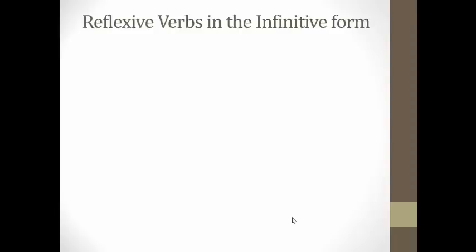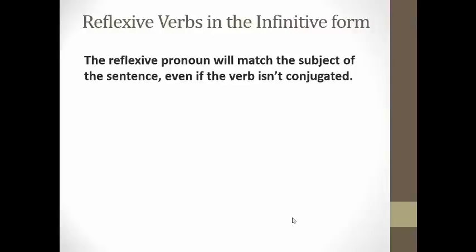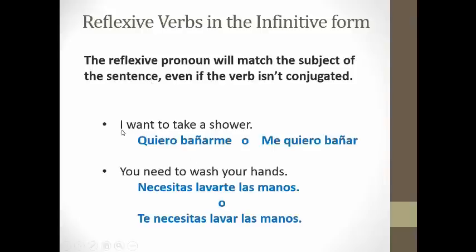Let's learn one more helpful hint when using reflexive verbs. Something important to remember: a reflexive pronoun will match the subject of the sentence even if the verb isn't conjugated. Look at my examples. I want to take a bath — I have the infinitive BAÑARSE, but it's not okay to say QUIERO BAÑARSE. I have to change what would have been the SE to ME, because it's got to match the subject. I is the subject in the sentence. But notice, because I've got two verbs — QUIERO BAÑARME — I've got two options as to where I can place my pronoun. ME QUIERO BAÑAR is also an acceptable answer.